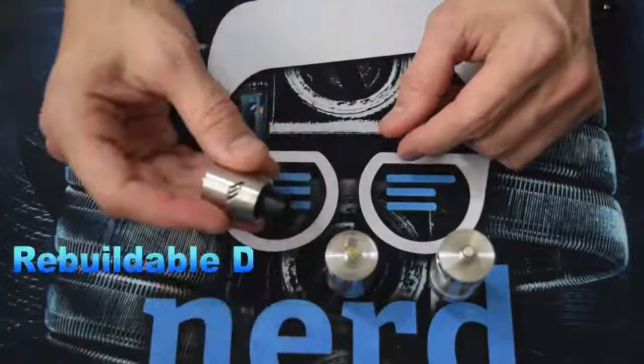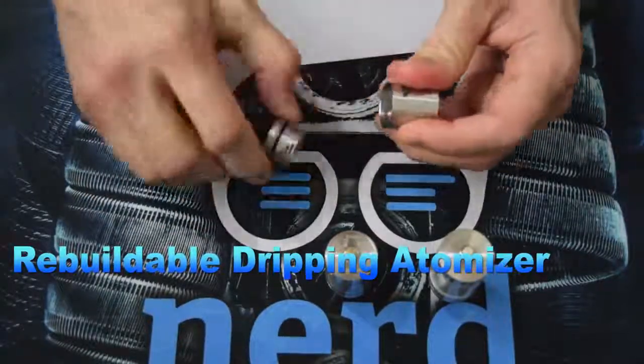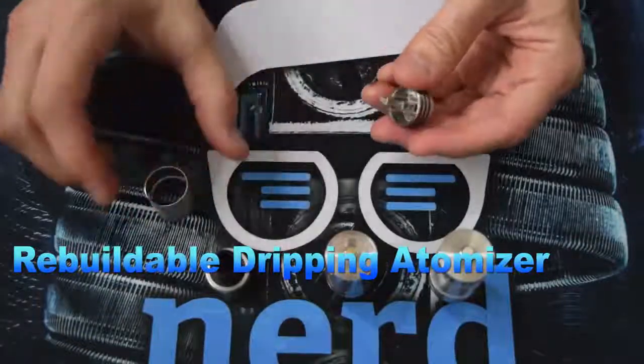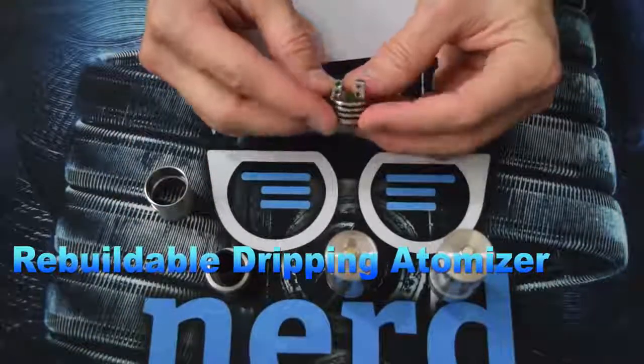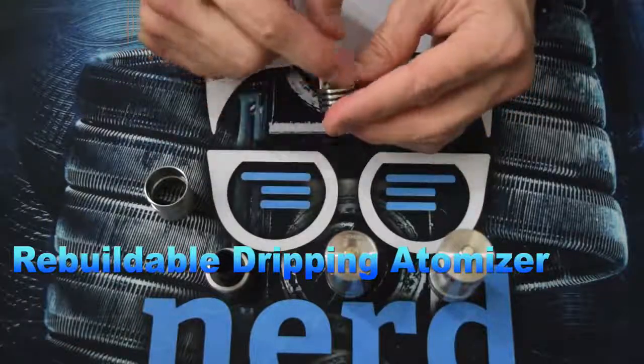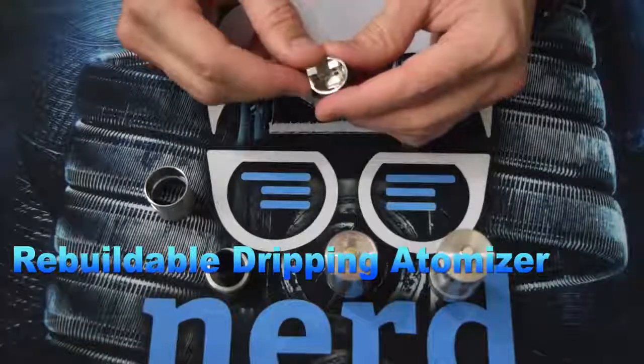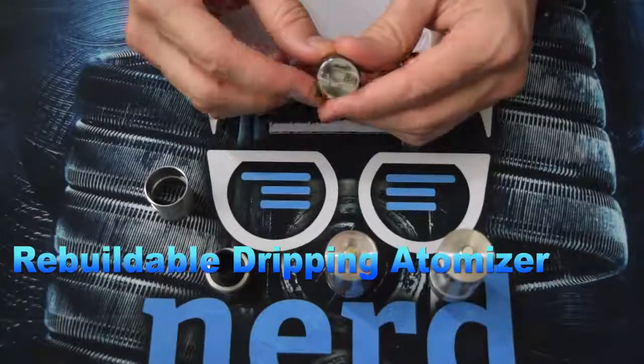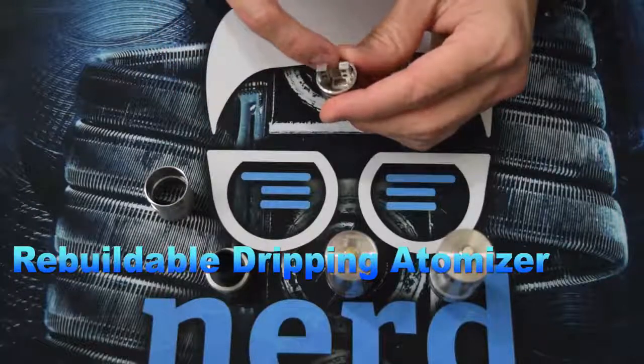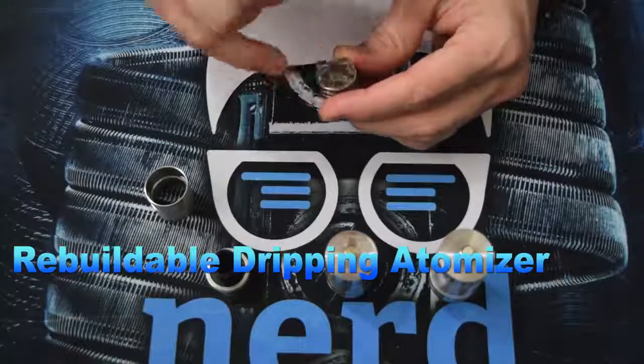Now the next atomizer, the RDA, the rebuildable dripping atomizer. I'm going to try and get this top cap off. This right here is the adjustable airflow control ring. Here is the barrel section and then here is the build deck. So, what you would do is you would install coils or in some cases coil. You would install one but in this case this is a dual coil deck so I would install two coils on here. I put my cotton in and wick it. As you can see it doesn't have a tank or anything so the juice basically is just on the wick, on the coil and a little bit down in this juice well.